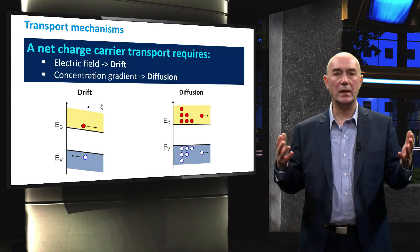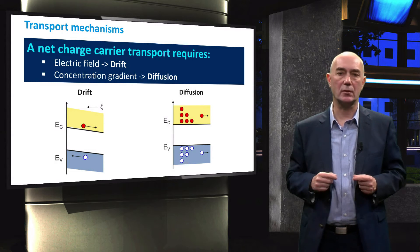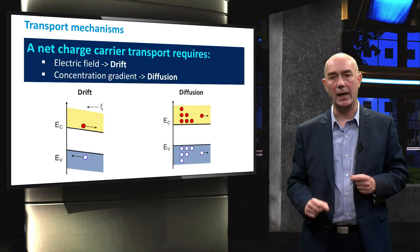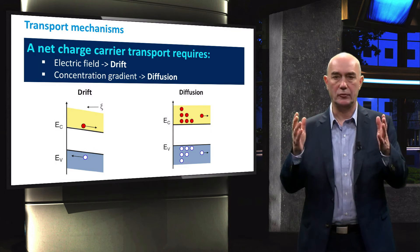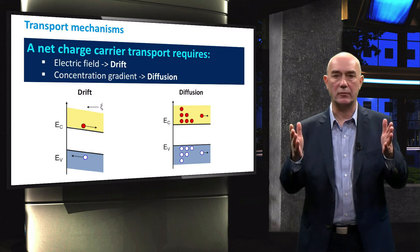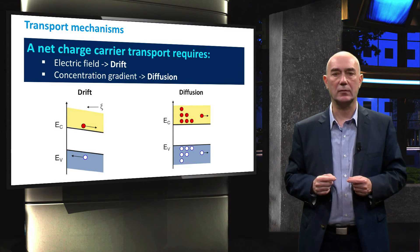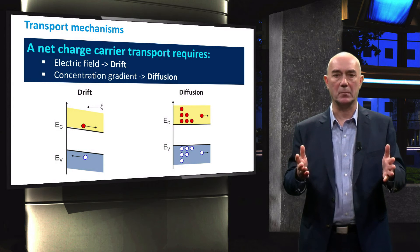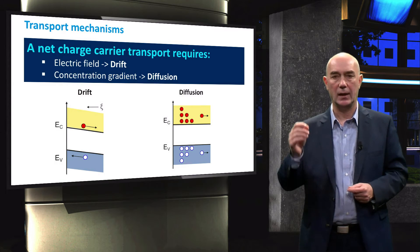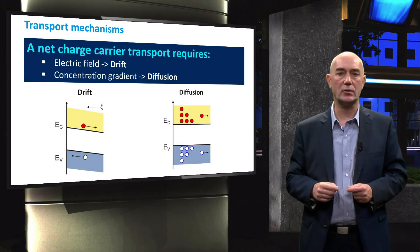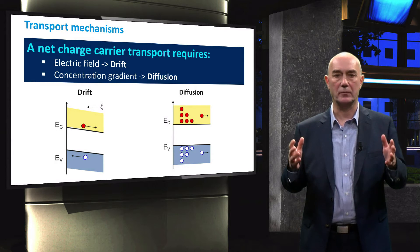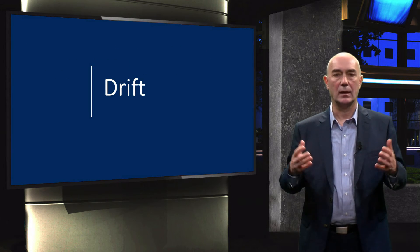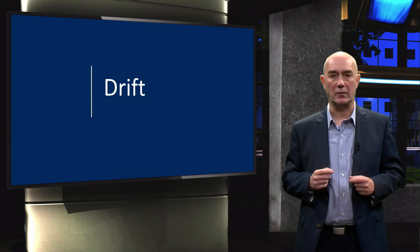But let's look at two different forms of transport which are important for solar cells. The two main mechanisms of carrier transport in solar cells are drift and diffusion. Drift is driven by an electric field. Diffusion is based on thermal motion and is driven by a concentration gradient of charge carriers. Let's begin with drift.